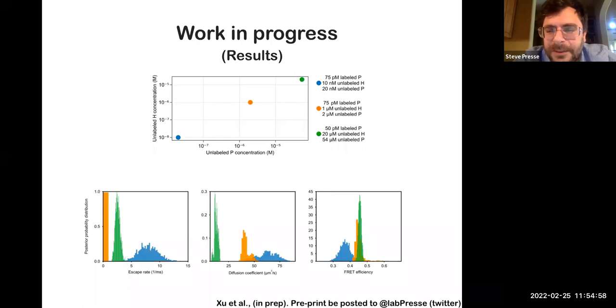And we can go up to even higher H concentrations where at this point we form large or what's hypothesized to be large P and H clusters. And what we find is roughly the same FRET efficiency, which is exactly what you would expect if a P is interacting with a large H and P cluster. Diffusion coefficients which are dramatically reduced and escape rates which are actually a little bit higher because now you're slightly more loosely bound consistent with what the literature has been reporting.